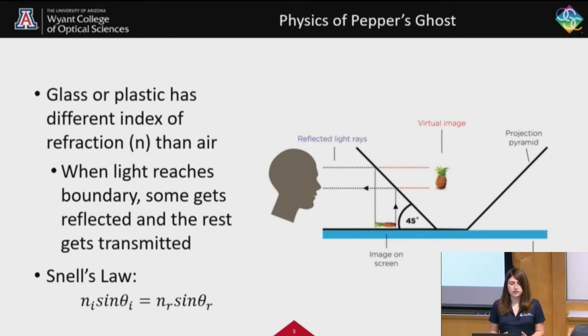So the n_i sin(θ_i) part refers to when the light is traveling through air. So n_i means the index of refraction of incidence. That refers to the air, which has an index of refraction of one. And then the sin(θ_i), theta i being the angle, the incidence angle, or the angle at which the light is traveling when it hits that boundary.